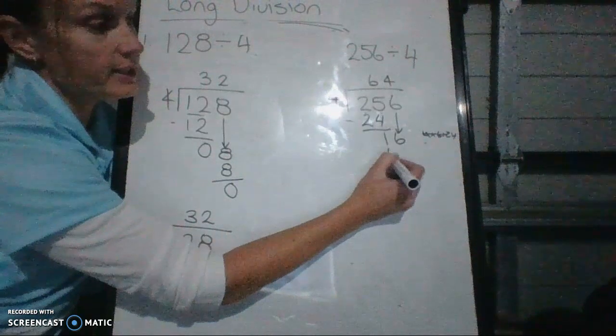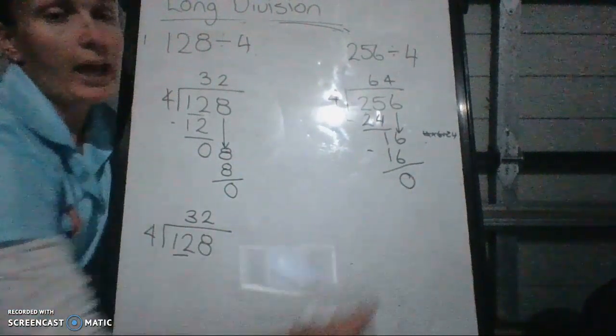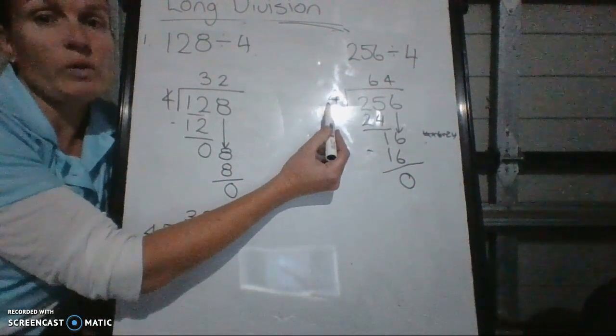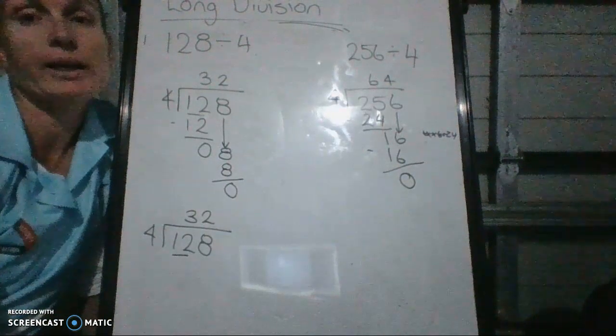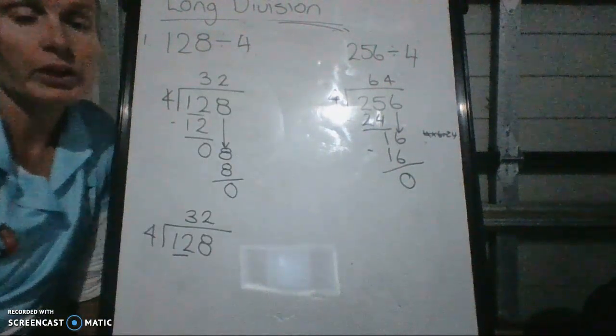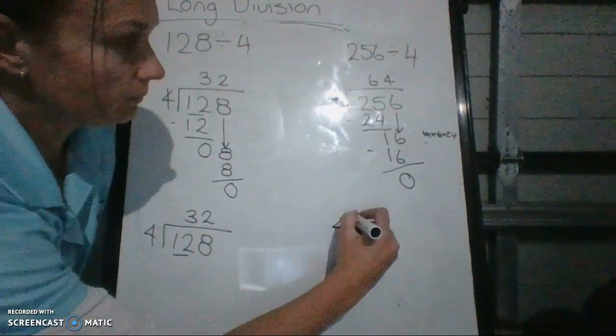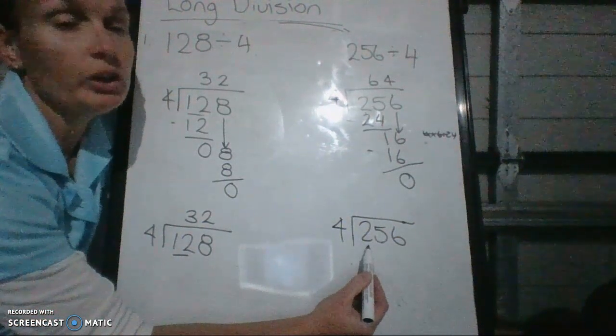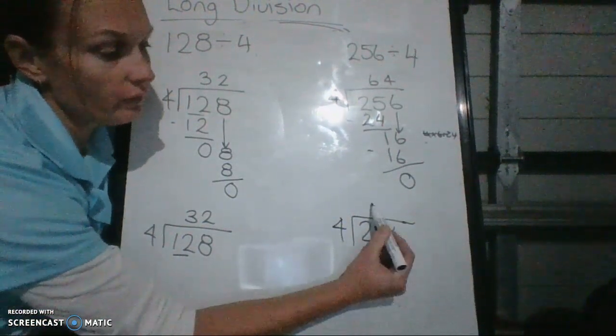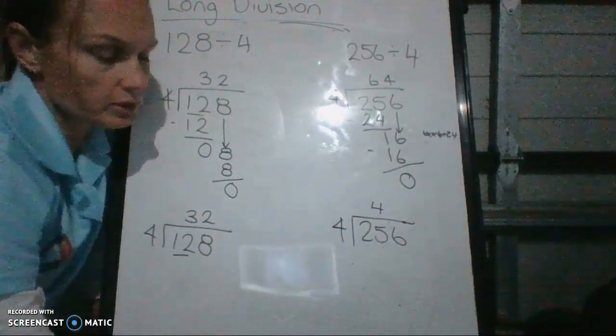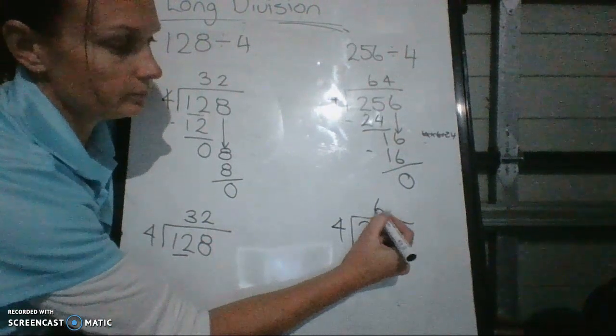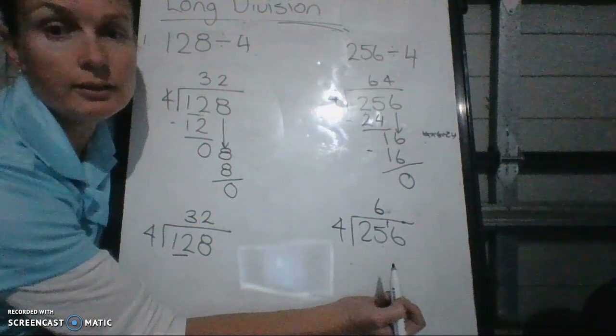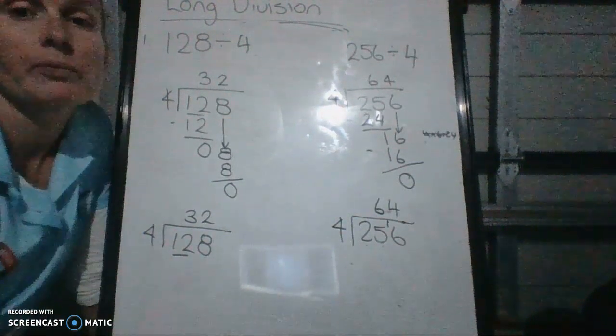So 4 times 4 is 16. Subtract that. And the answer I get is 0. So I can split 256 into 4 groups. And each group will have 64 numbers, 64 objects. So the shorter version. 4 goes into 2, you can't do. 4 goes into 25, 6 times. And 1 left over. 4 into 16 is 4. So that's 2 different types.